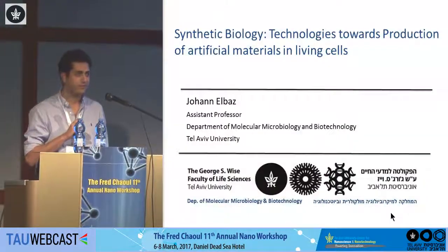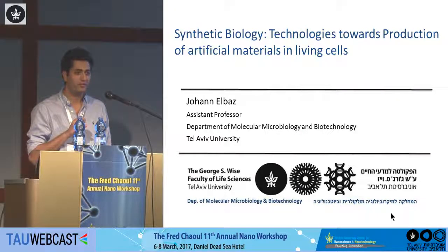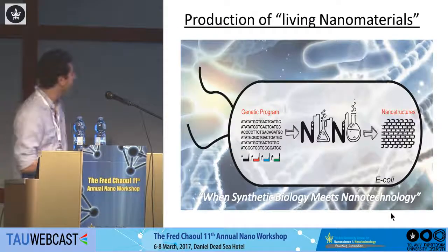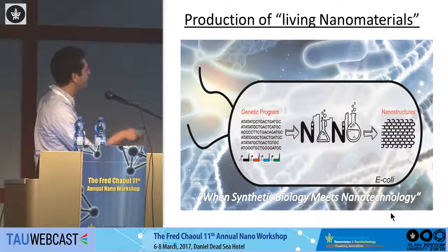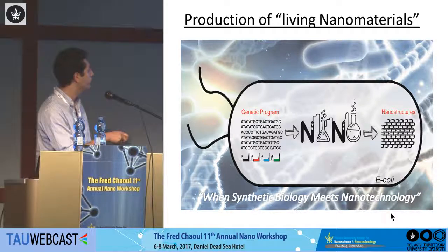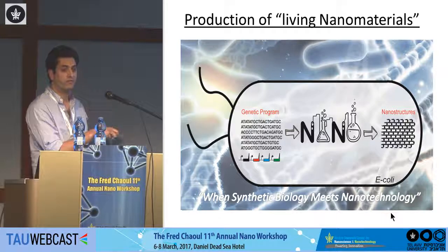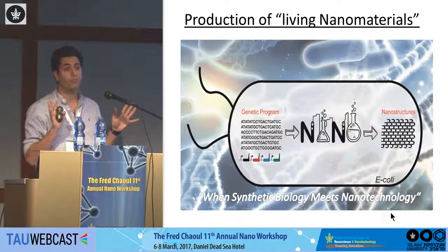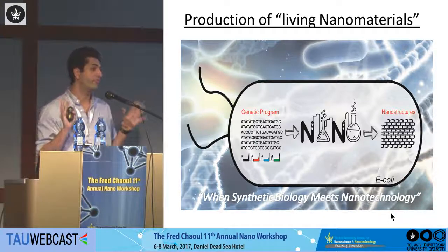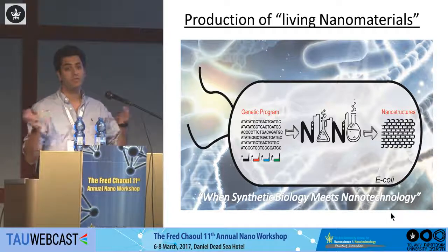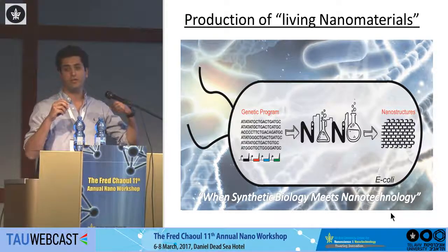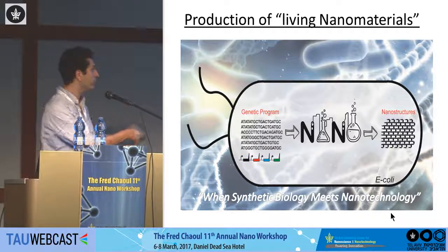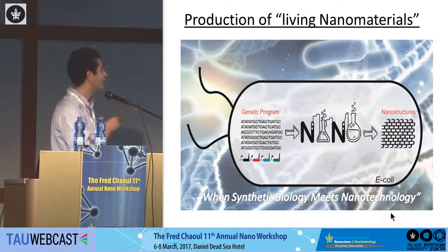Hi everybody. I'm a new PI in the Biotechnology Department — I just came back from MIT a few months ago. What I will describe today is mainly: can we manipulate cells, living organisms, to produce nanostructures in the cell? Can we manipulate them to do structures that are completely artificial — something that cells do not know how to do? Can we bring different functions from different biological places, put them together using a genetic program, and synthesize these nanostructures?